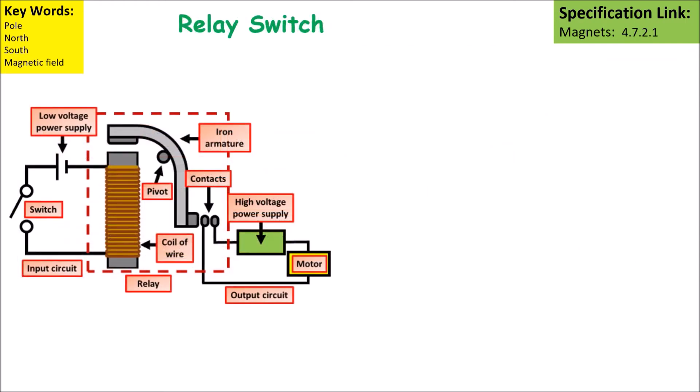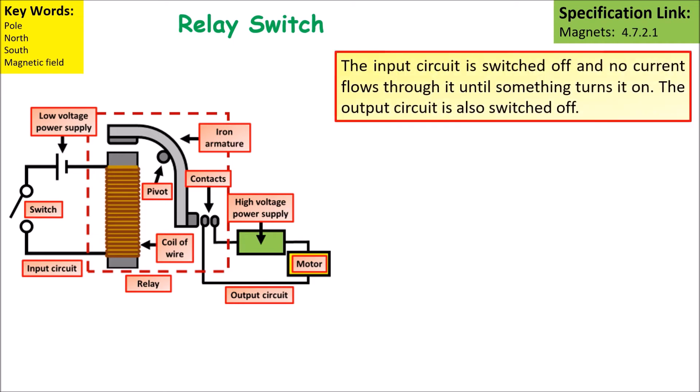The final type of use of an electromagnet that we want to look at is a relay switch. Relay switches are used when you want to turn on something that is high voltage at a distance.